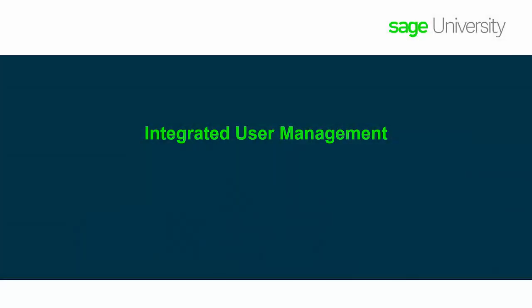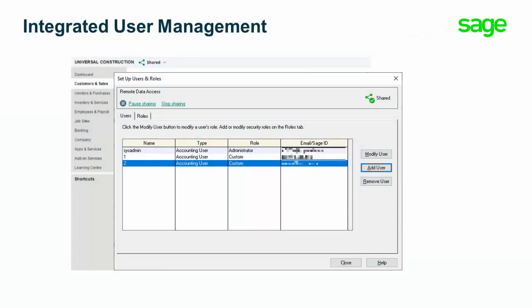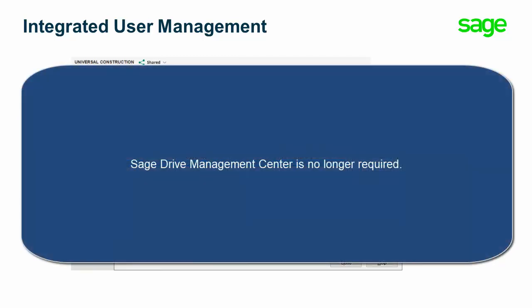But that's not all that's in this release. It gets even better — here's the icing. User management is now integrated directly into Sage 50, enabling users in multi-user mode to see who else is connected to their company data when working remotely among colleagues with premium or quantum licenses. Sage Drive Management Center is no longer required following this release.